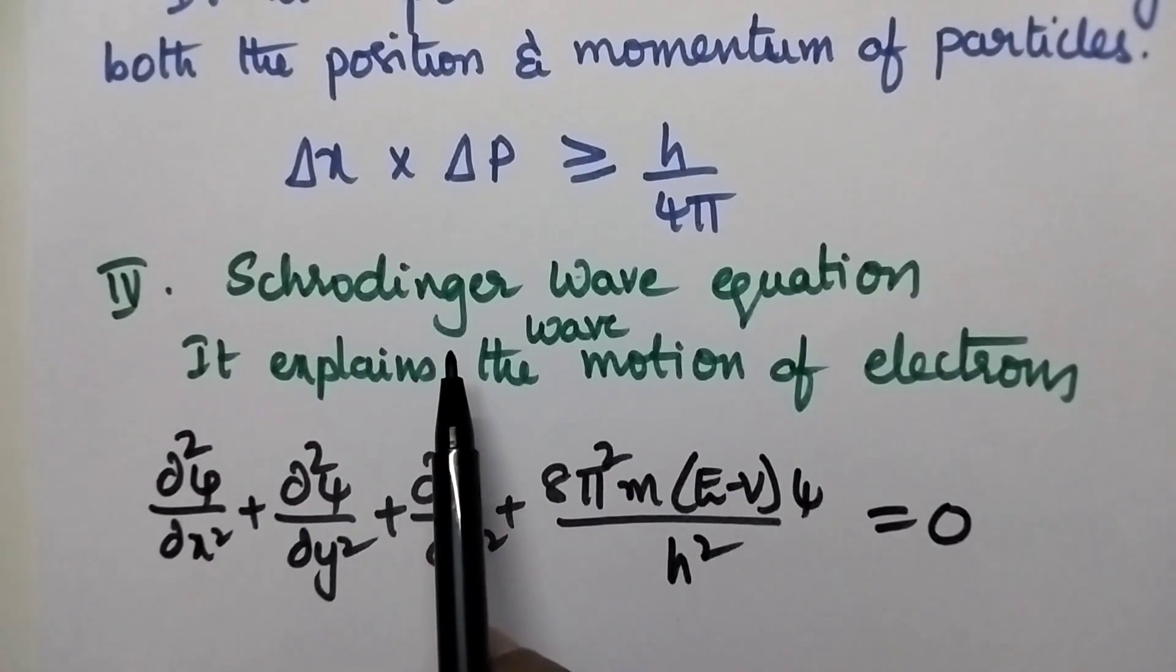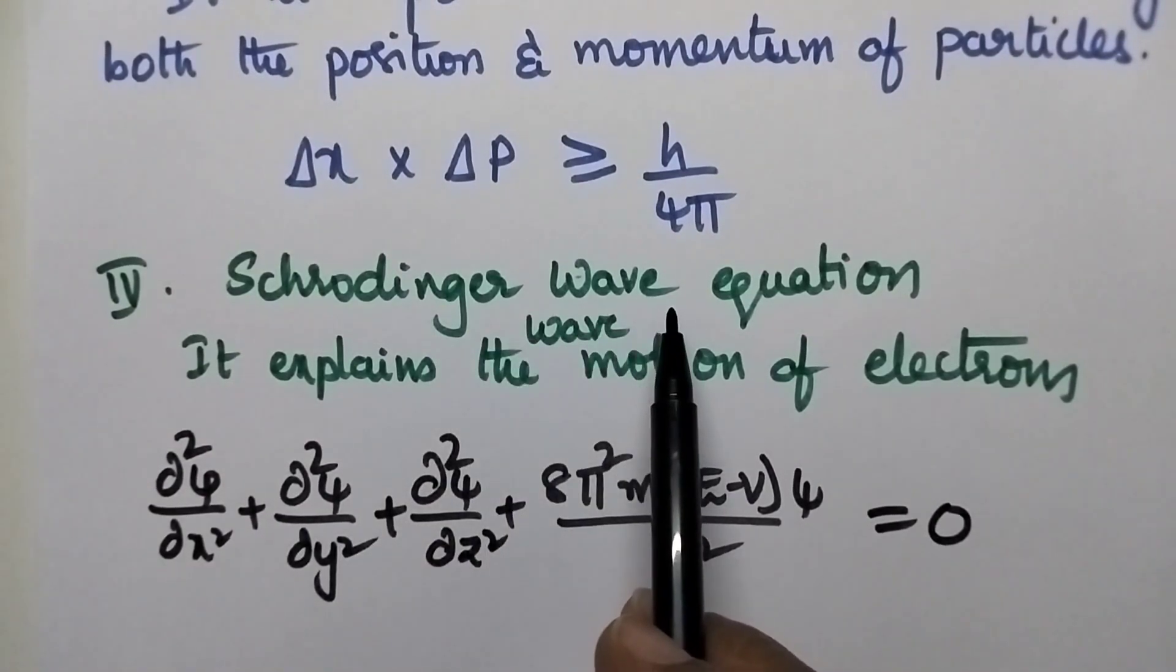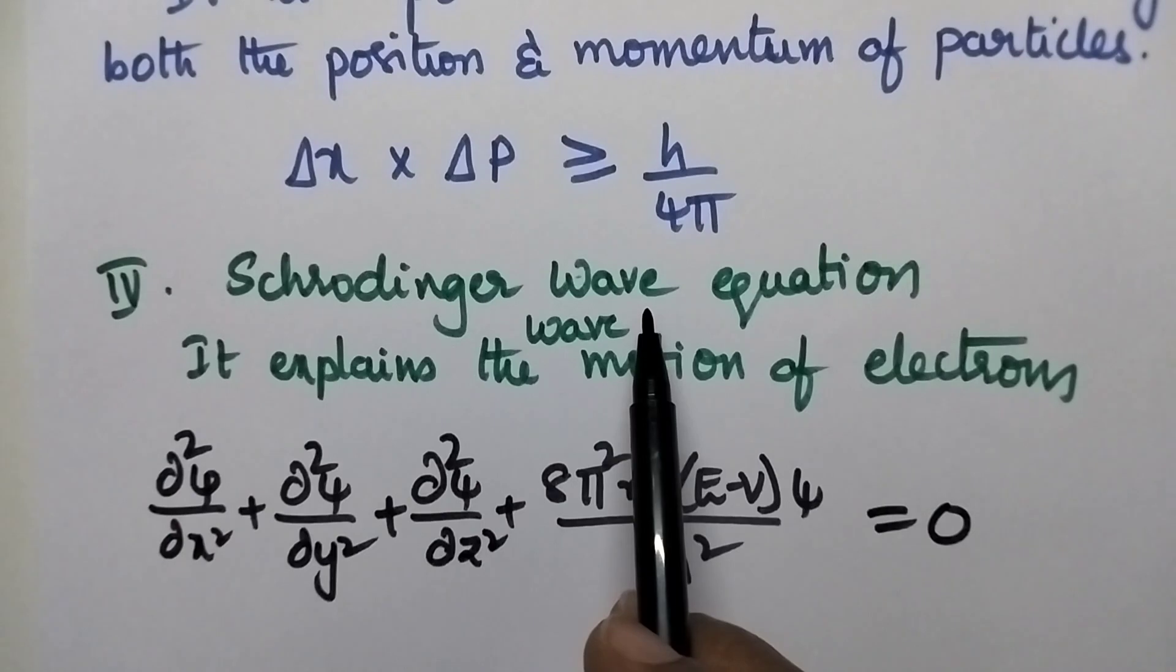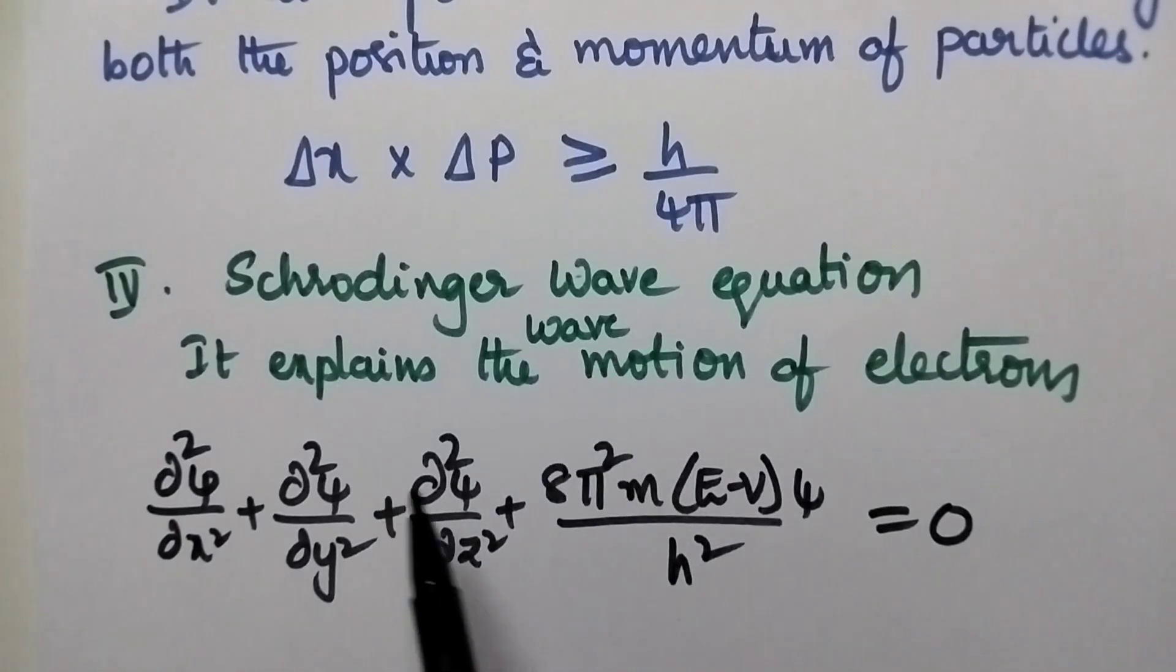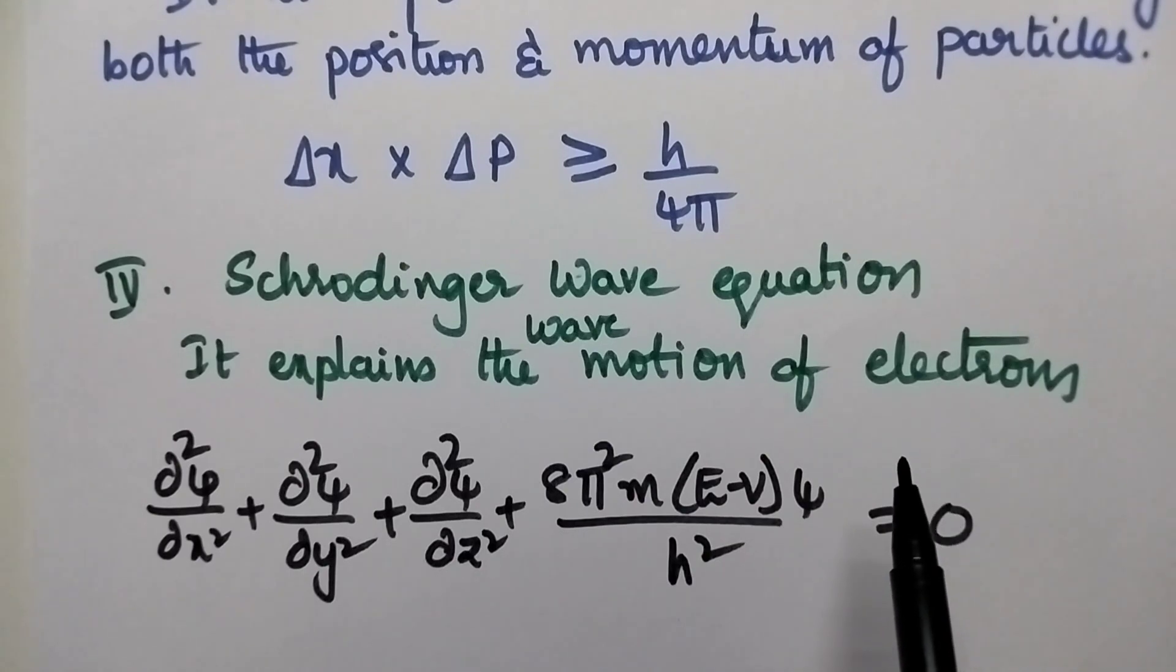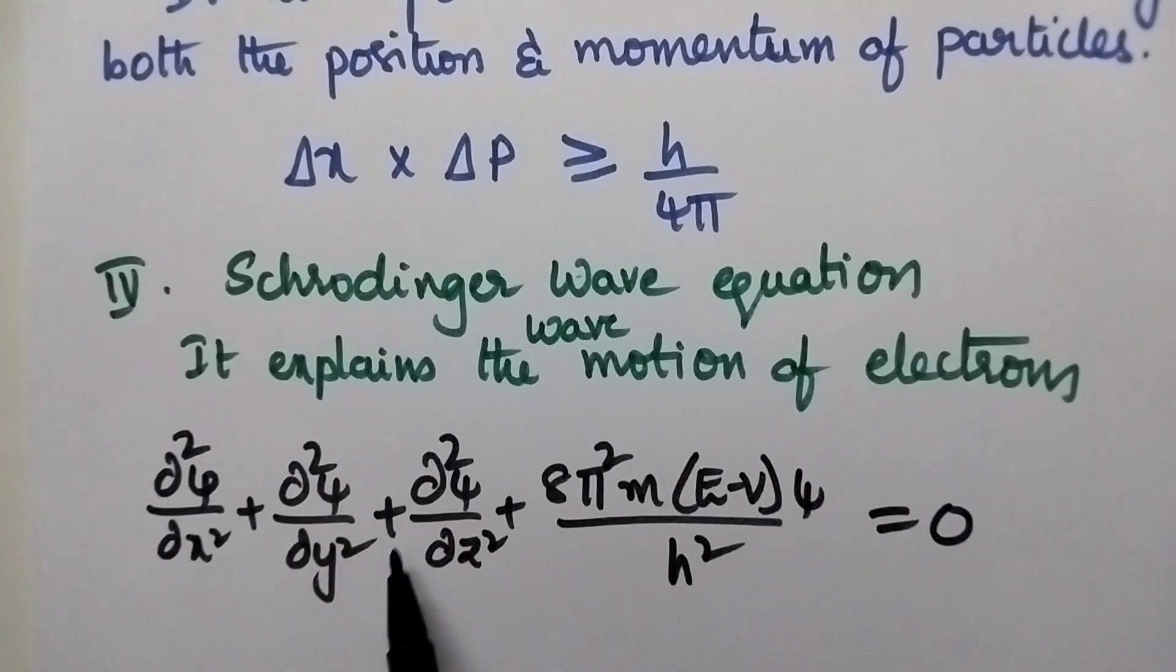Finally, Schrodinger developed a wave equation based upon Heisenberg's uncertainty principle and de Broglie's wave equation, which explains the wave motion of electrons. It can be expressed as d squared psi by dx squared plus d squared psi by dy squared plus d squared psi by dz squared plus 8 pi squared m times (E minus V) times psi by h squared equals 0.